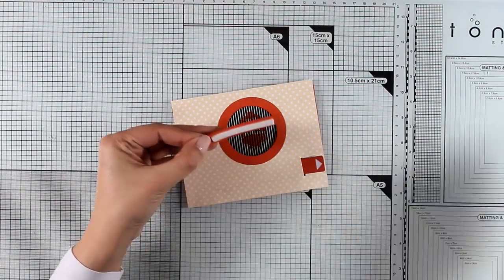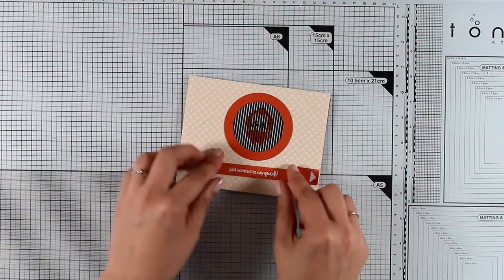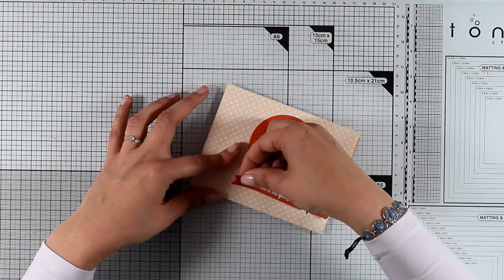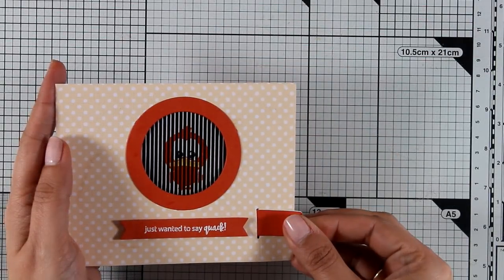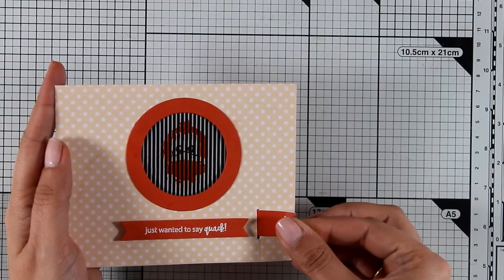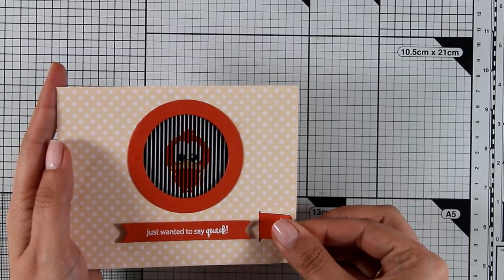For my sentiment I used one from the same stamp set as the little duck that says 'Just wanted to say quack.' I used VersaMark and white embossed it. I'm keeping this card really simple just like it is. I think this animation really makes the card and it's really mesmerizing.